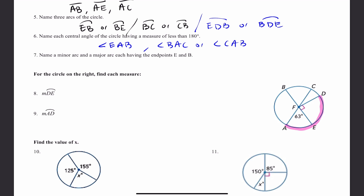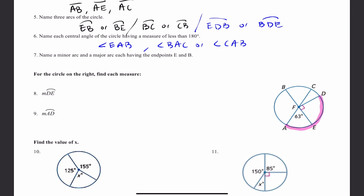Now if this were to say the measure of arc ABD, then you would be looking at a different arc — not this one. 80 is not this arc, but 80 is the other one. That's what I'm trying to say.